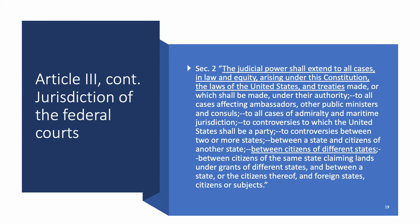Continuing with Article 3 — what is the judicial power of the federal courts? The judicial power extends to all cases arising under the Constitution and the laws of the United States — that's what we call federal question jurisdiction, cases that arise under federal law. Examples include immigration, bankruptcy, and other federal statutes. The other is cases between citizens of different states — diversity of citizenship jurisdiction. Those cases go to the federal courts; everything else goes to state courts.